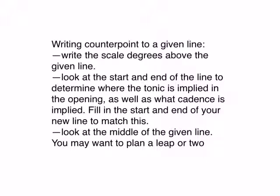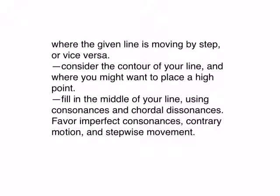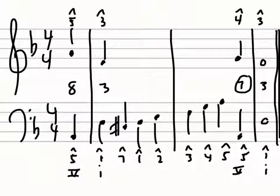Now look at the middle of the given line. You may want to plan a leap or two where the given line is moving by step. Or if the given line has some leaps, plan stepwise motion in the second line. You want to consider the contour of your line and where you might want to place a high point. Then go ahead and fill in the middle of the line using consonances and chordal dissonances. We favor the imperfect consonances, thirds and sixths. We like contrary motion. And we like the line to move mostly by step.